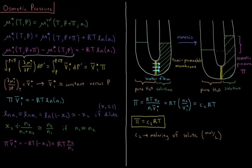χ₂, the mole fraction of the solute, equals the number of moles of solute divided by number of moles of solvent plus number of moles of solute. If the solution is dilute, N₁ is much greater than N₂, so N₁ + N₂ ≈ N₁, and χ₂ ≈ N₂/N₁.